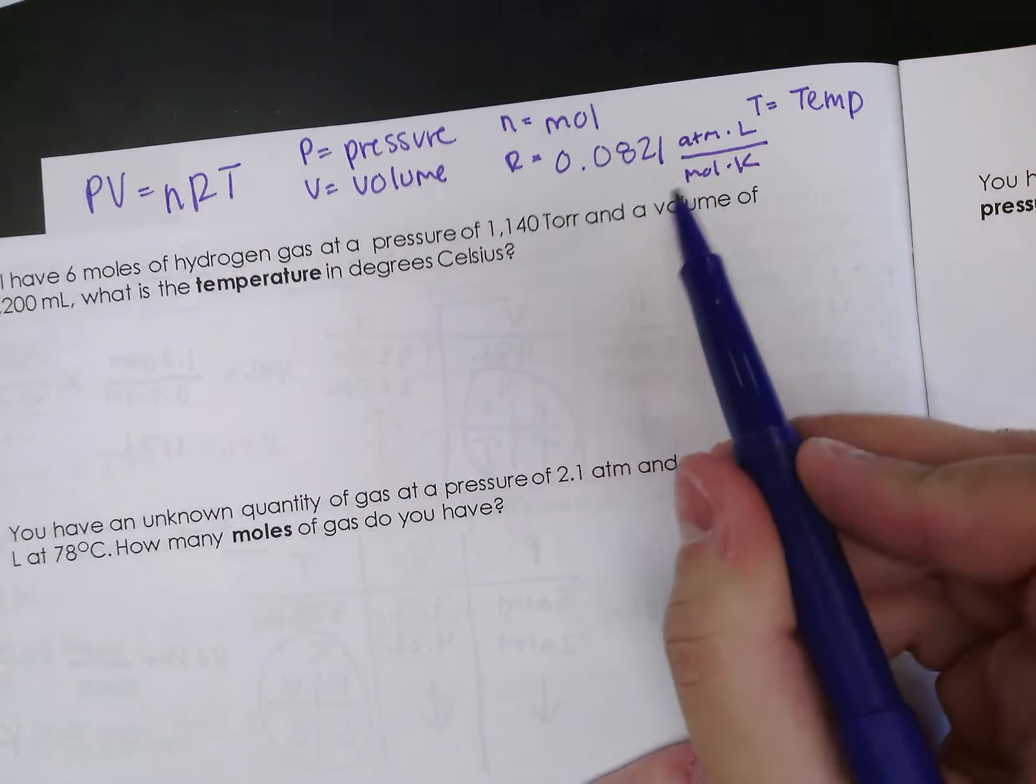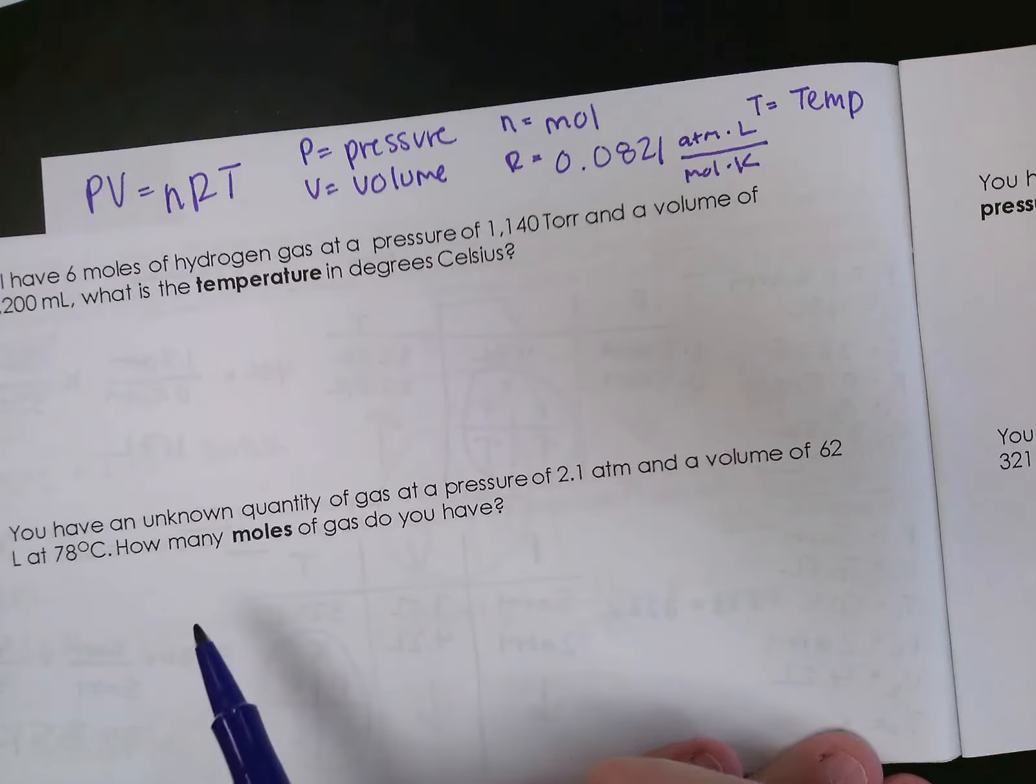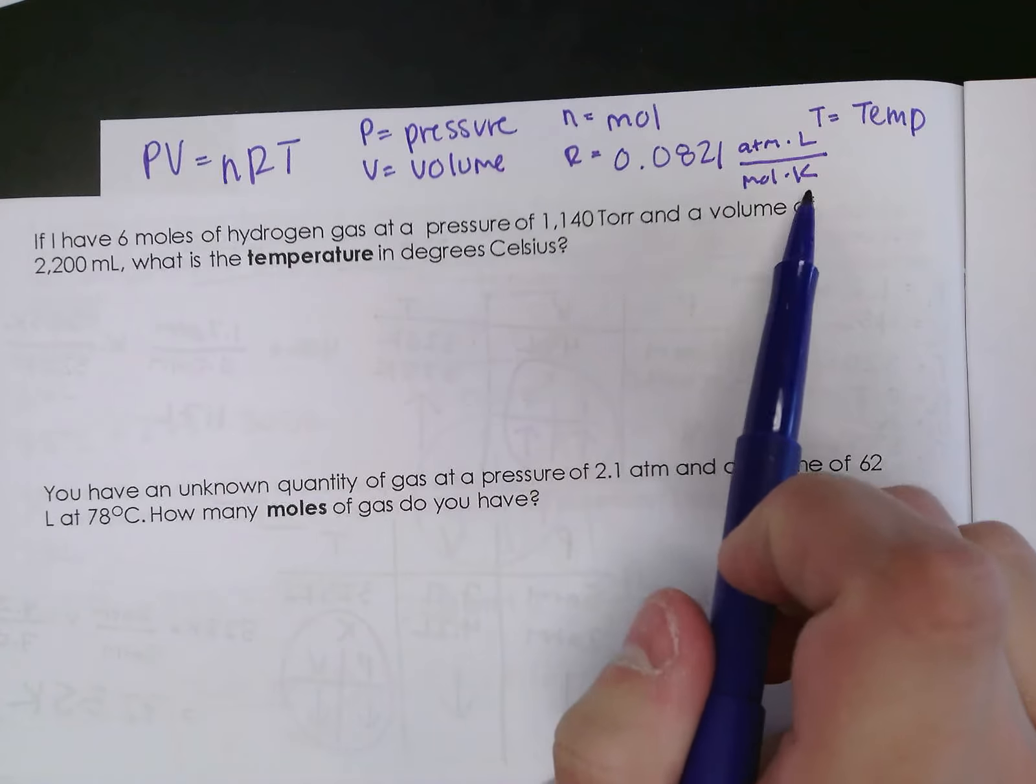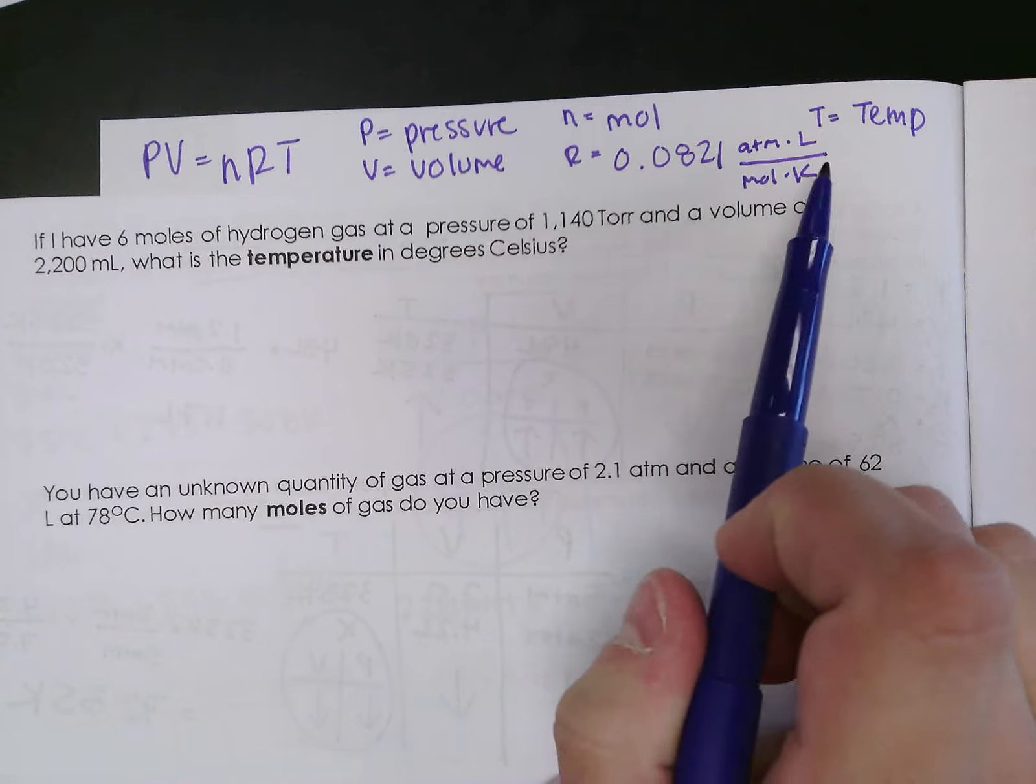Since this is our constant, it's telling us what units we need to make sure that our other pieces are in. So unlike our other gas laws where we just had to change to kelvin, we now have to make sure that our pressure is in atmospheres and our volume is in liters.